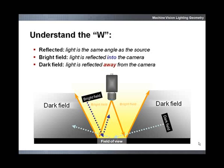The W shape defines two fundamental zones of illumination: bright field within the W and dark field outside of the W.